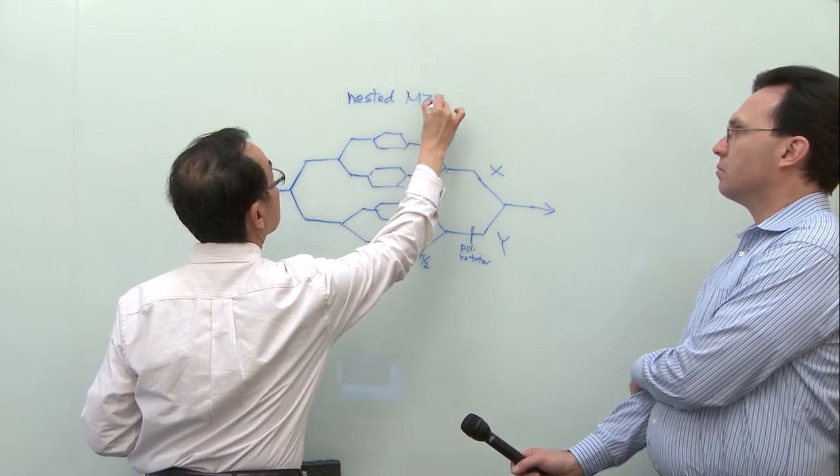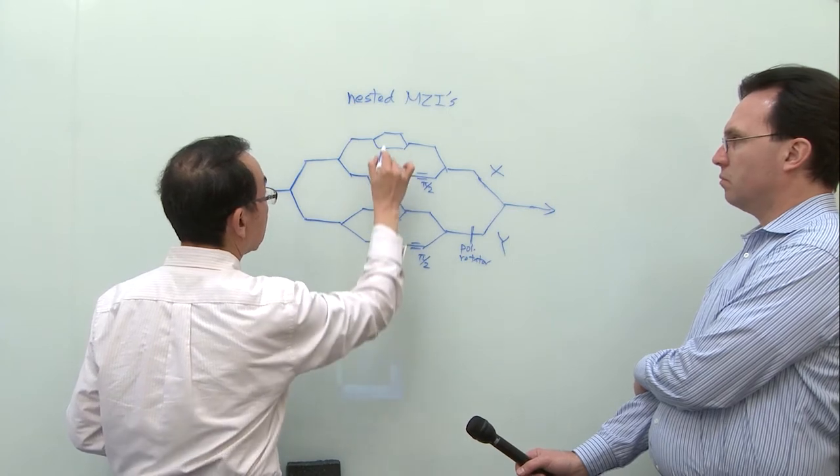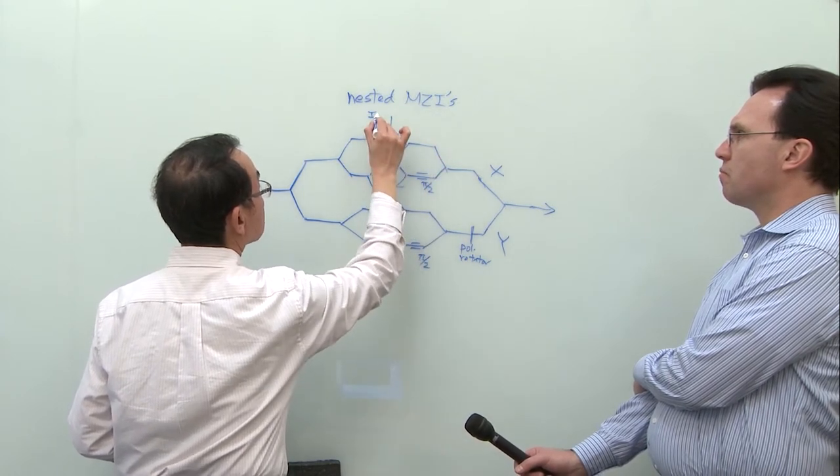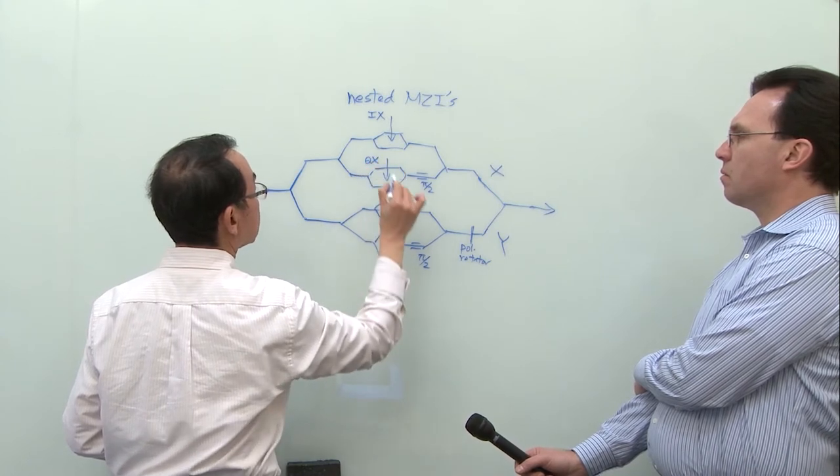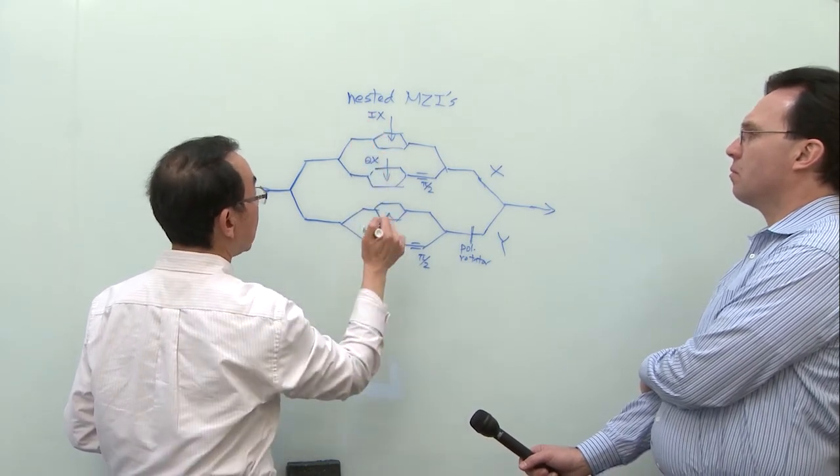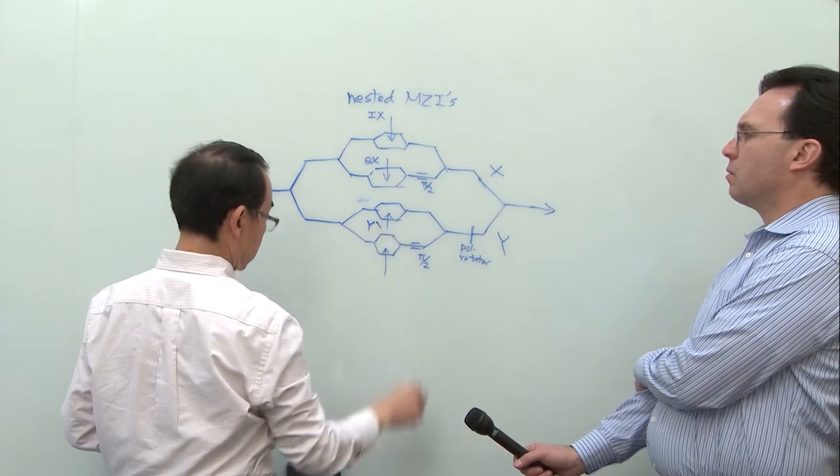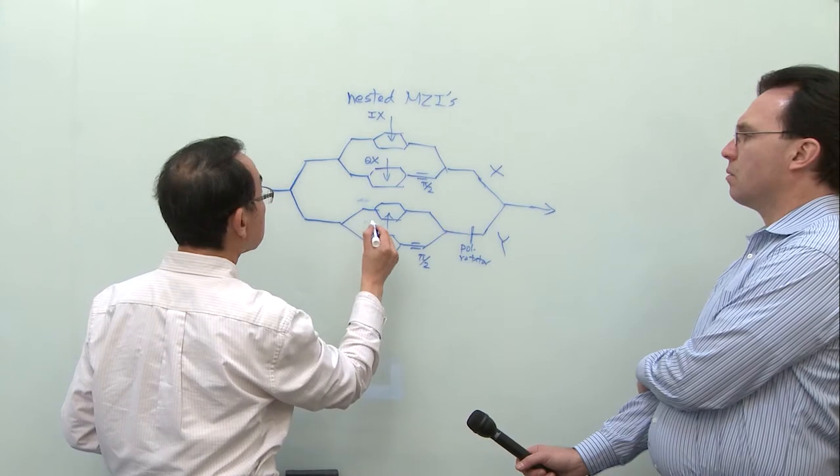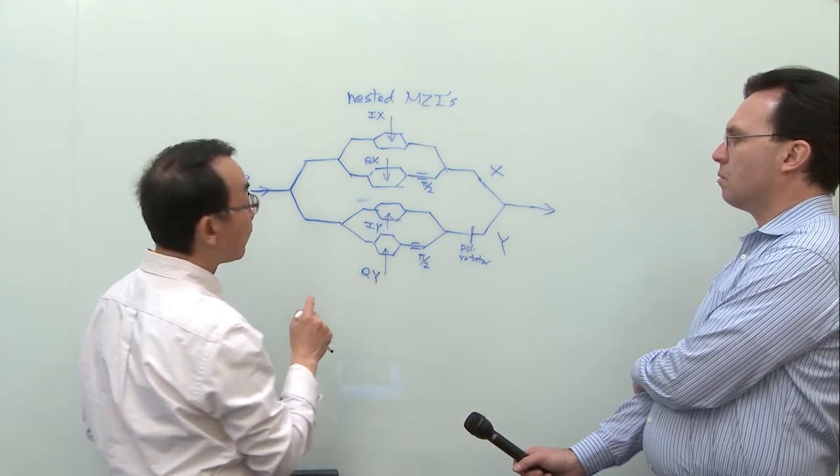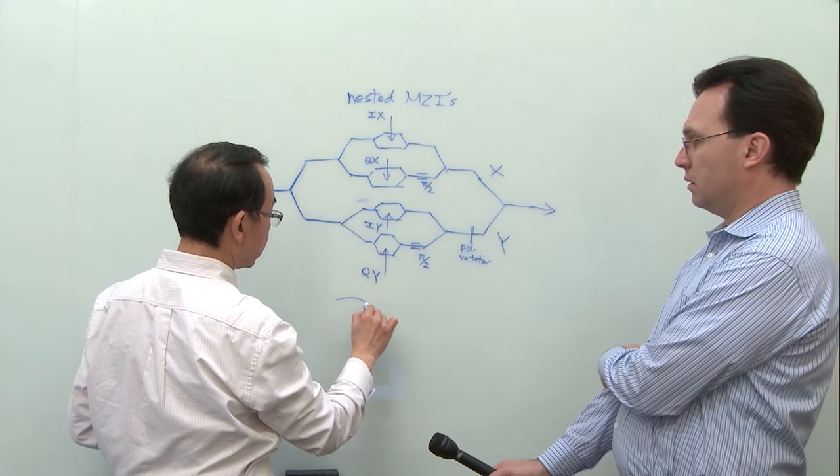Then I combine them, so then I have X polarization and Y polarization coming out. And this is the tunable laser that's going into this so-called nested Mach-Zehnder modulator. Are you also modulating intensity as part of your QAM scheme? Yeah. So when you drive a signal, there are four driving signals here: one, two, three, four.